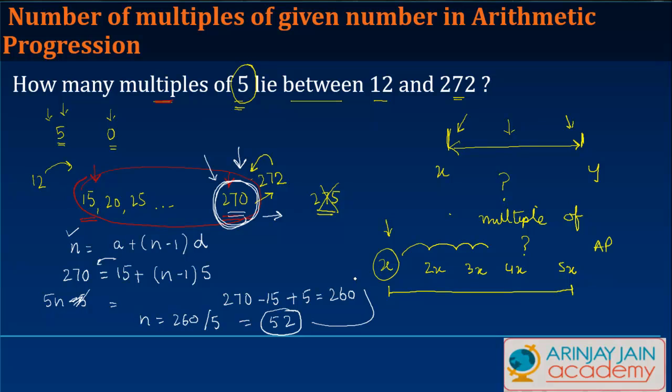n is equal to 260 divided by 5, which is 52. So there are 52 multiples of 5 which lie between 12 and 272. The trick was simple: find out between these two numbers which is the first multiple of 5 and which is the last multiple of 5. Once you have this, this typically forms an arithmetic progression. You need to find out how many terms are there, which effectively is as good as saying what is the number of the last term. We just equate this value and get the answer.